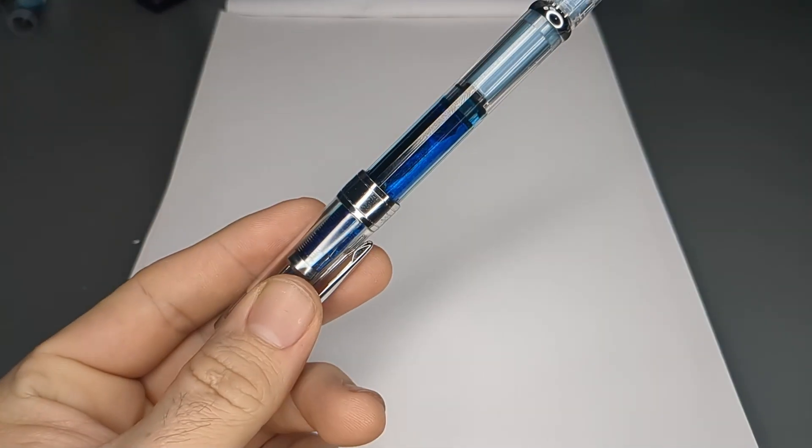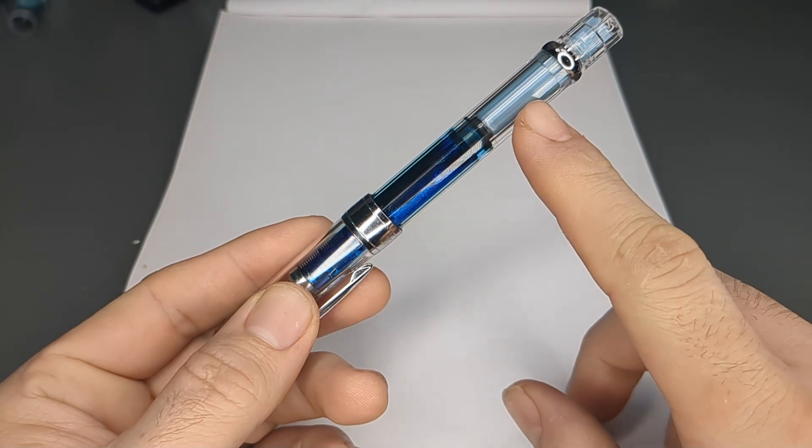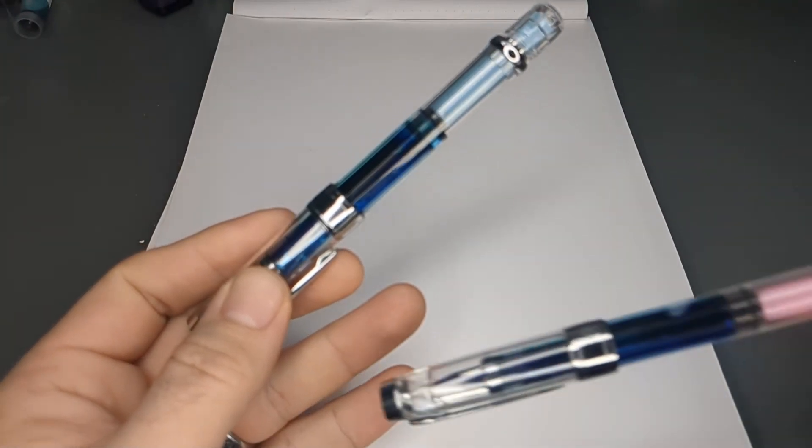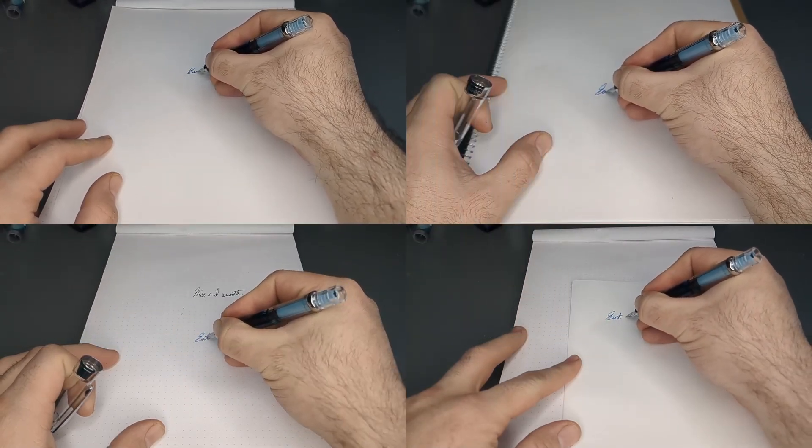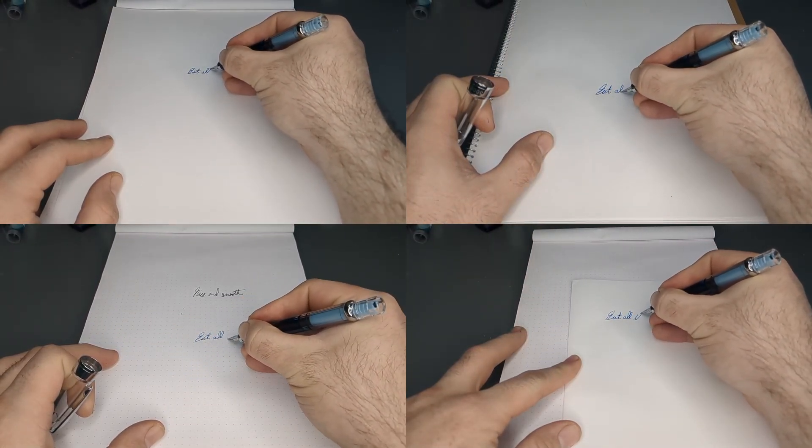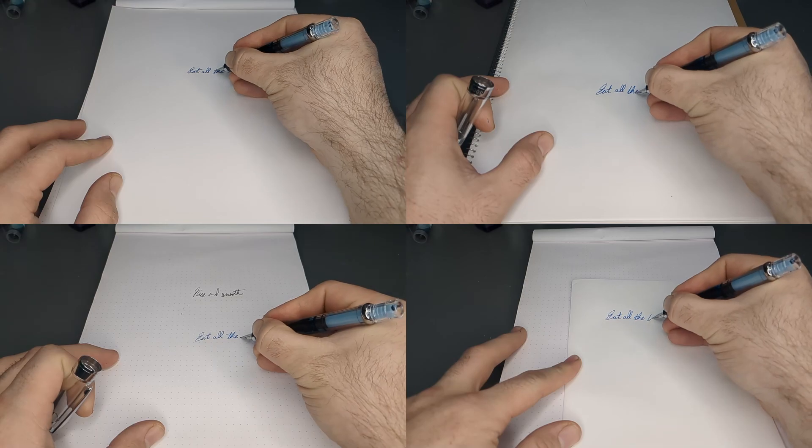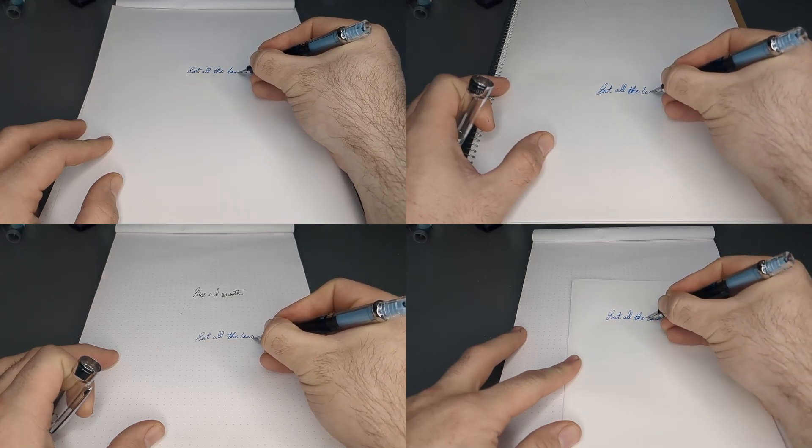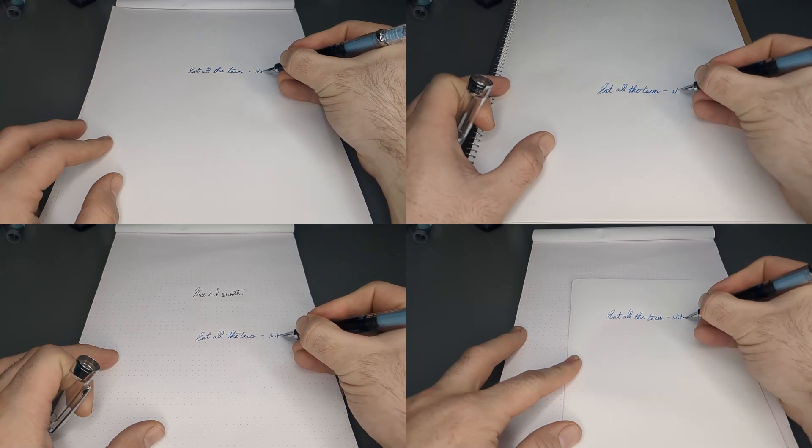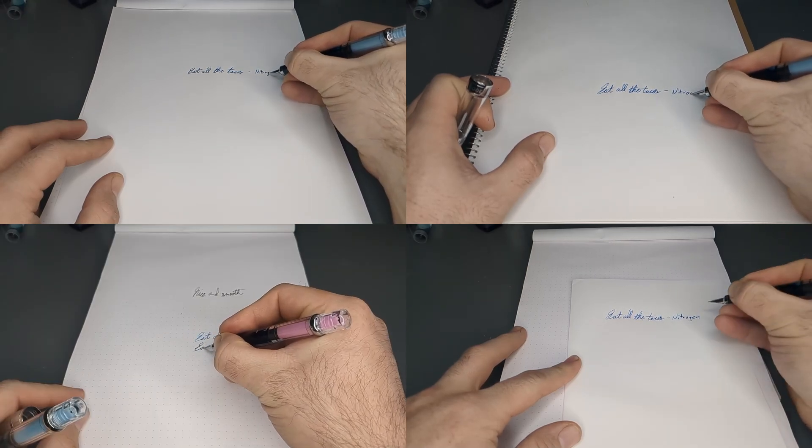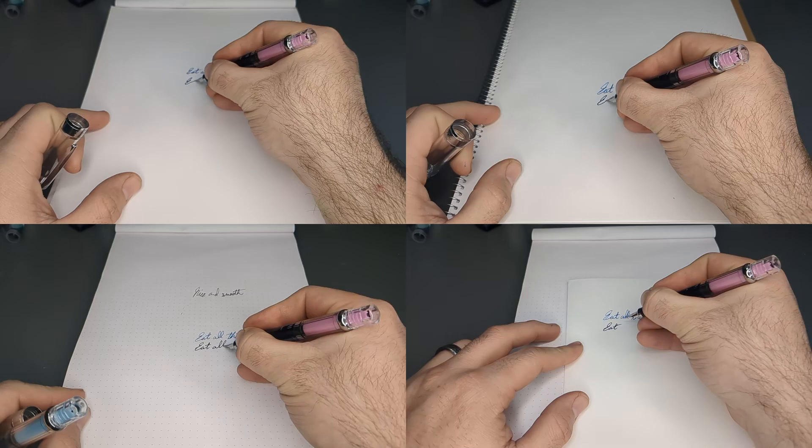So I've got two pens ready to go and do writing samples on each of these papers. The pen that has the blue accent to it has the nitrogen ink, and the one with the pink accent will have the Skull and Roses. So we'll do a quick writing sample of all four of these papers. We'll have the budget ones on the left and the more premium options on the right. And then we'll do a closer look to see how these actually perform.